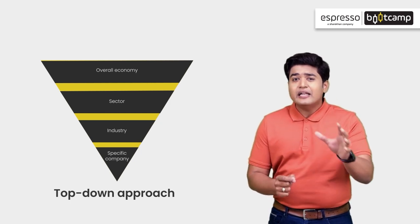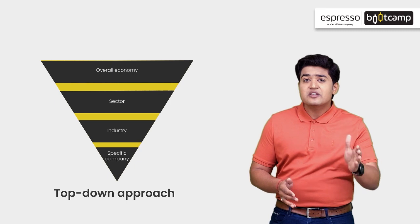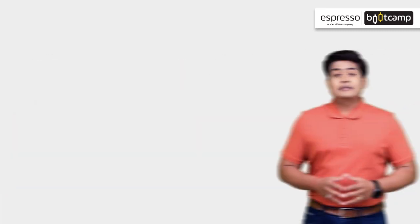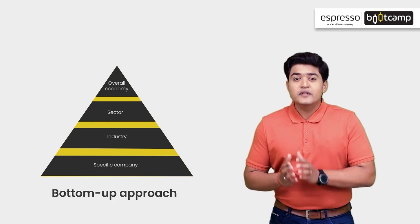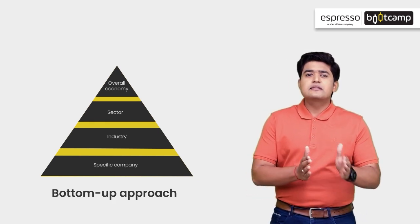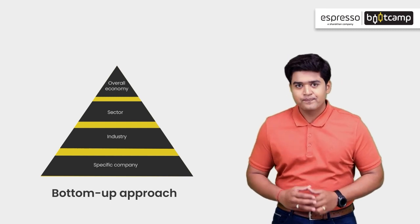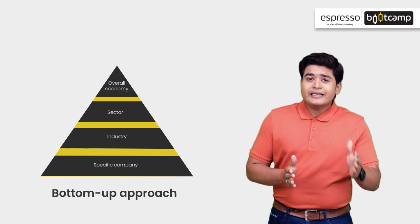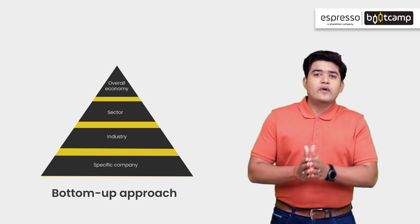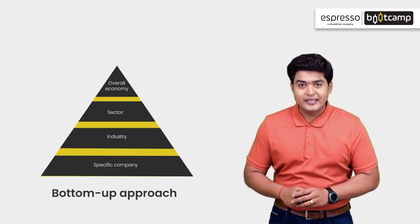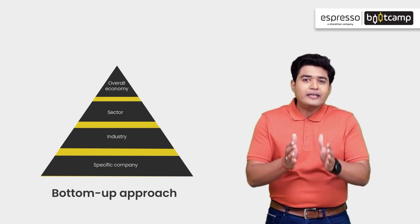The analysis of these identified sectors and industries helps us to determine specific companies to invest in. The second approach is bottom-up. The underlying belief of this approach is that a company has the potential to perform well even in underperforming sectors. In this approach, the targeted company's intrinsic value is derived from its business model and qualitative aspects. After that, the company's fundamentals are compared to the sector and industry.